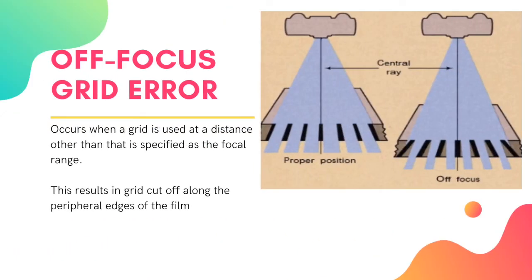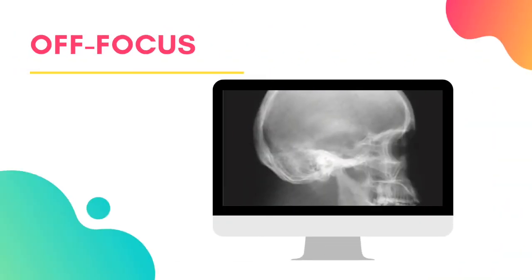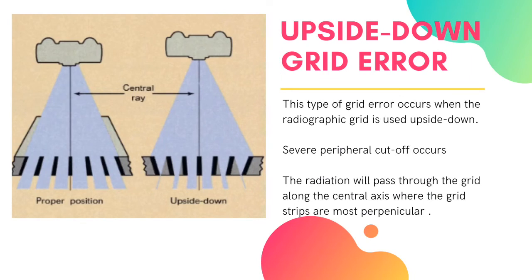The next grid error is called off-focus. This occurs when a grid is used at a distance other than that specified as the focal range, resulting in grid cutoff along the peripheral edges of the film. Grid cutoff occurs if the SID is less than or greater than the focal range, and both appear radiographically as a loss of density at the periphery of the film.